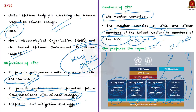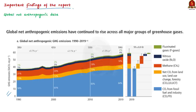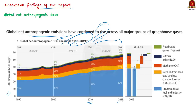Now we have covered all the basics regarding IPCC. Let us come back to the article and look at its major findings. From the graph, you can see that the global net anthropogenic greenhouse gas emissions have been increasing since 1990, and the trend continued for the last decade — between 2010 to 2019. However, the rate of growth between 2010 and 2019 was lower than that of between 2000 and 2009. This may be the only positive data from this report.